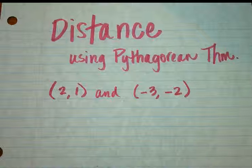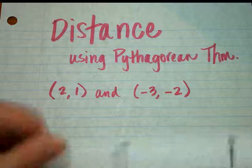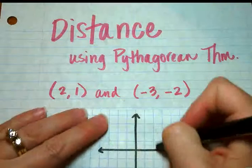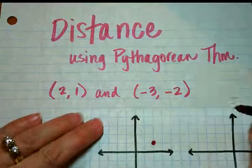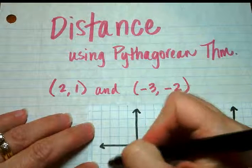and I have a few graphs from an earlier video, if we were to graph these, the point 2, 1 is right here, and the point negative 3, negative 2 is right here.